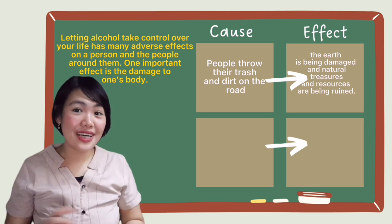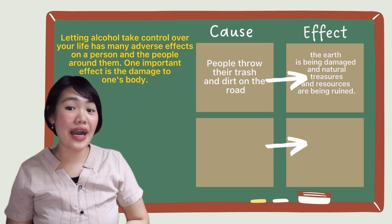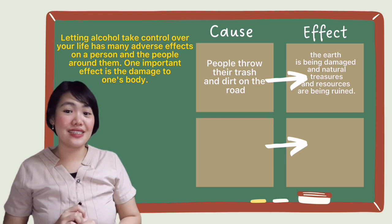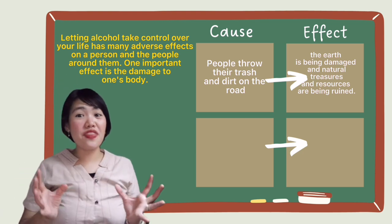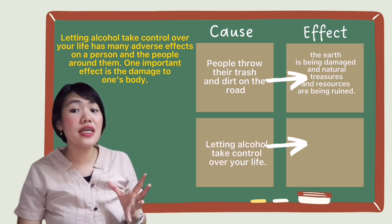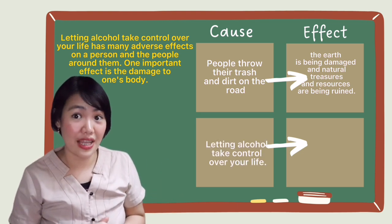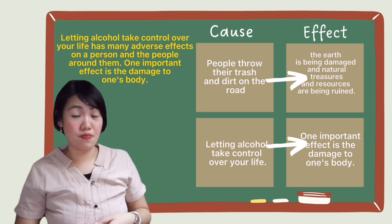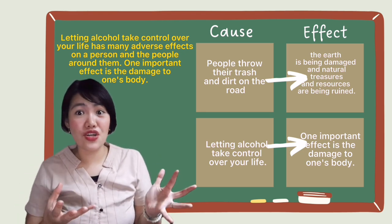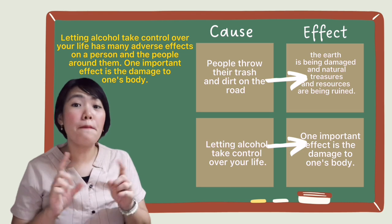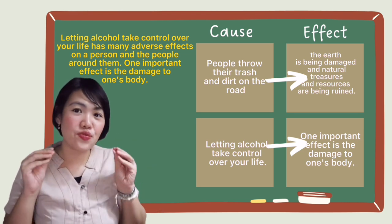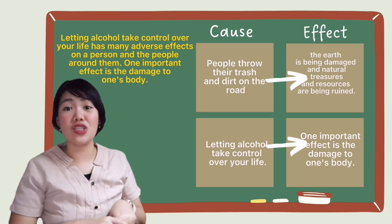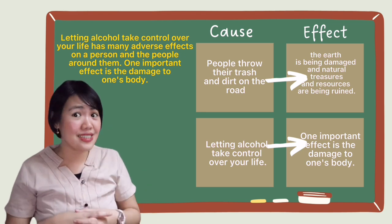Another example: letting alcohol take control over your life has many adverse effects on a person and the people around them. The cause is letting alcohol take control over your life, and one important effect is the damage to one's body. As you can see, there is no signal word used, but if you read the text carefully, you will know which is the cause and which is the effect based on the connection of the ideas in the text.